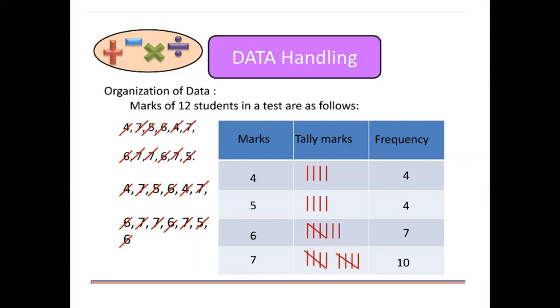When we organize the data in tabular form, it is called the frequency distribution table. This makes it easy for us to understand and interpret the given data at a glance.